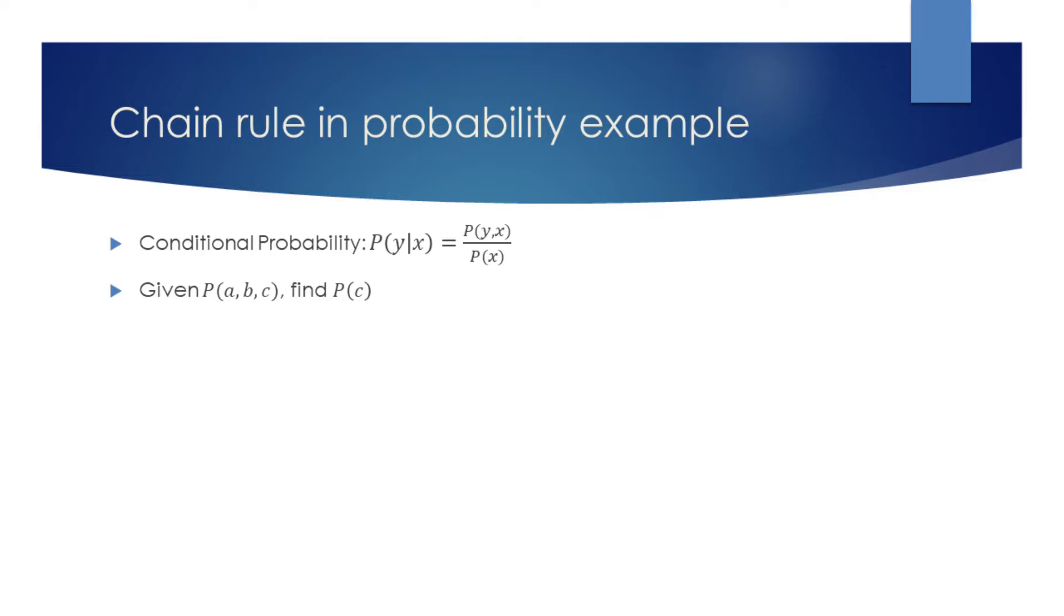First, let's find the conditional probability of A given that B and C have happened. From the formula of conditional probability, we know that it is equal to the joint probability of A, B, and C divided by the joint probability of B and C.